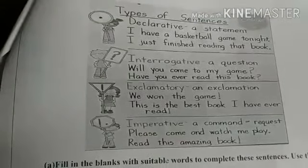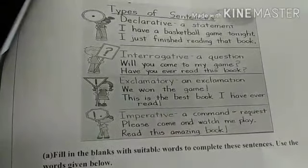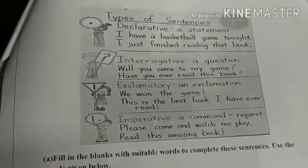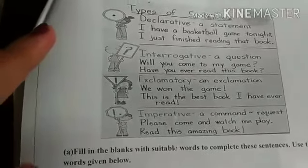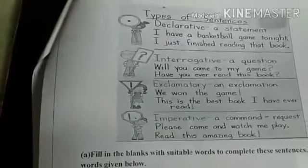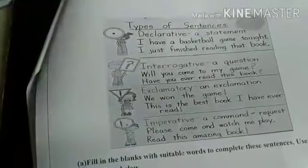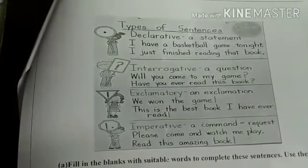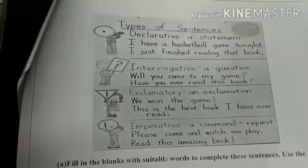So dear kids, let's see the types of sentences. The first one is the declarative sentence, which is also called an assertive sentence. Its sign is a full stop. A declarative sentence is a statement — for example: I have a basketball.